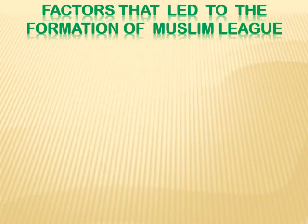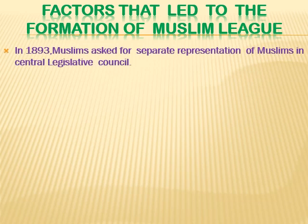The next topic is the factors that led to the formation of the Muslim League. First, in 1893, Muslims asked for separate representation of Muslims in the Central Legislative Assembly. Earlier, the National League simply demanded representation in the Legislative Assembly for all Indians collectively — seats were not divided by community. But after 1893, Muslims said: we want separate seats for us as Muslims. If you are providing 20 seats for Indians, tell us specifically how many seats are being provided to Muslims. They demanded separate electoral representation for themselves after 1893.